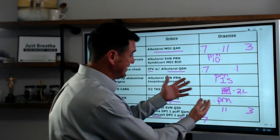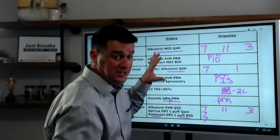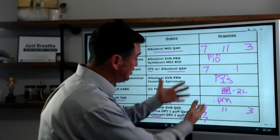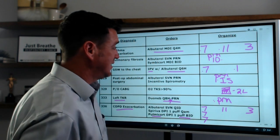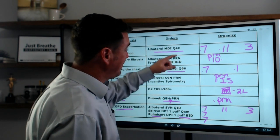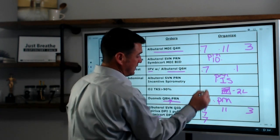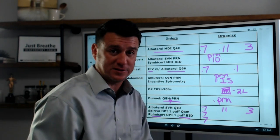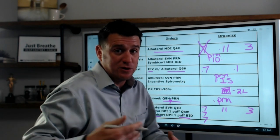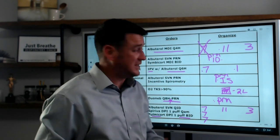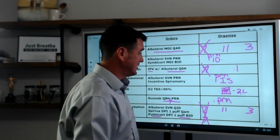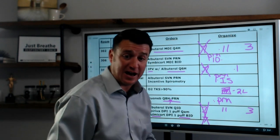Now this is what my day looks like — one sheet of it. Multiply this by as many sheets as you have at your facility. You can see I now have an organization set up. I can look at this and identify my first priority patients, know when I'm going to see them, and know what I'm going to do. Some people do it differently, but this is what I do.